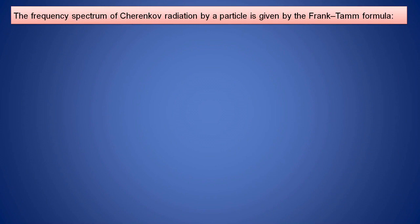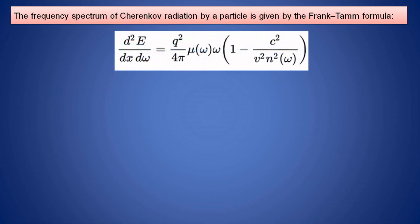The frequency spectrum or energy spectrum of Cherenkov radiation by an electron or a particle is given by the Frank-Tamm formula. The Frank-Tamm formula is: d²E / (dx dω) = (q² / 4π) × μ(ω) × ω × [1 − c² / (μ²(ω) × n²(ω))].